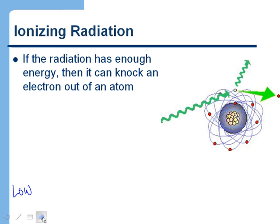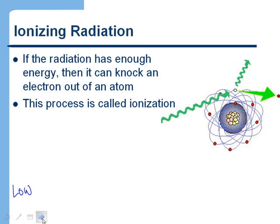We now want to talk about a subset of the radiation we were just discussing, which is ionizing radiation. Radiation that has enough energy to knock an electron out of an atom is called ionizing radiation. That process of radiation coming in and interacting with an atom and knocking an electron out is called ionization.